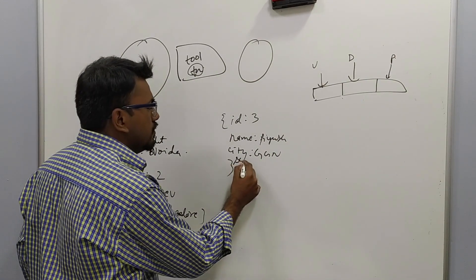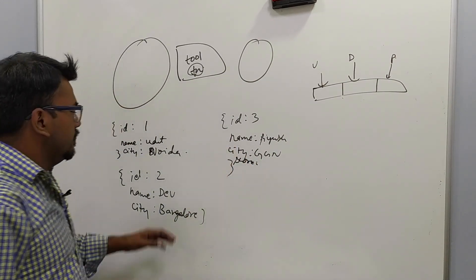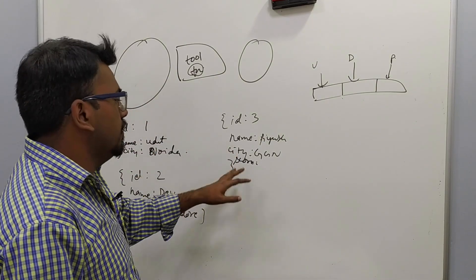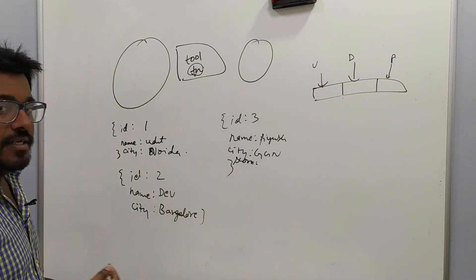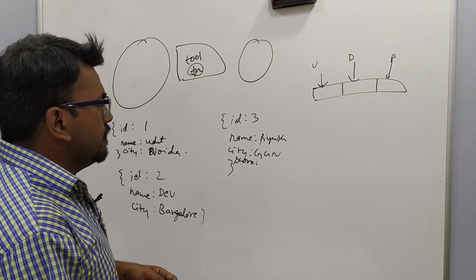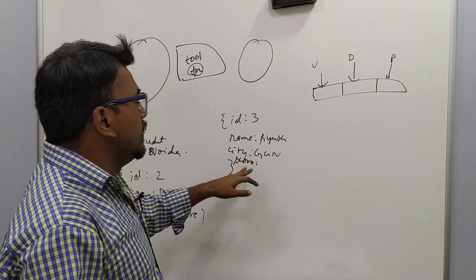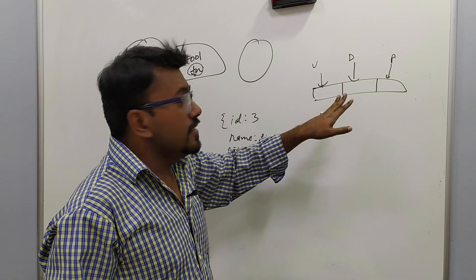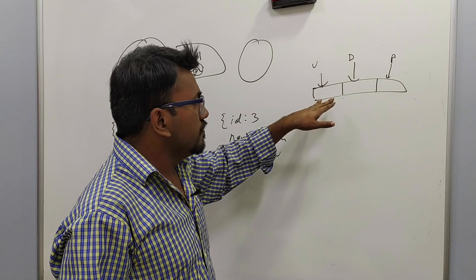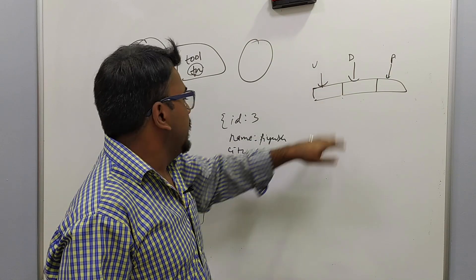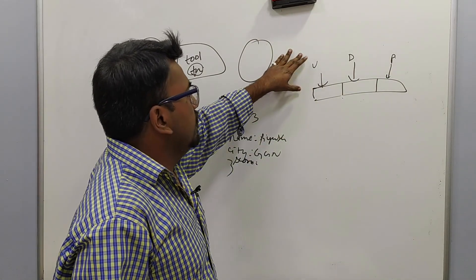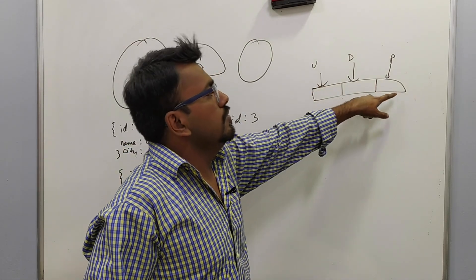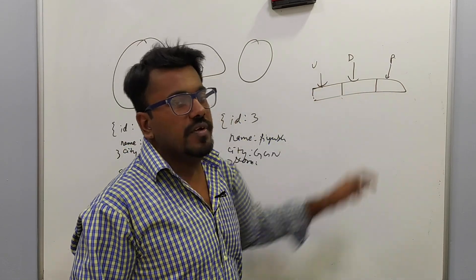Now let's say they are also storing scores — they are playing a game and there is some score associated with each player. So as and when each player makes a move, you will have to update the score. For updating the score, if the update comes for player 3, you come to this list and try to find Piyush. You ask: are you Piyush? No. Devash? No. Piyush? Yes. So you update the score there.